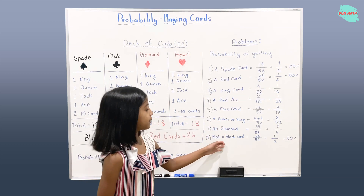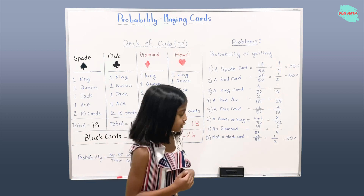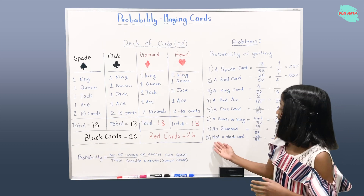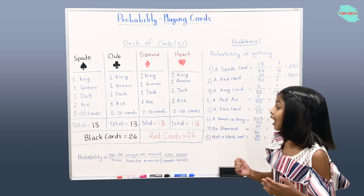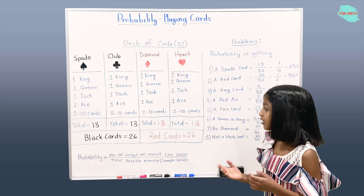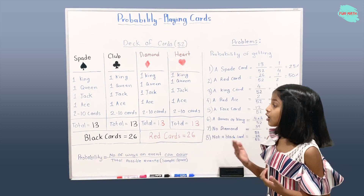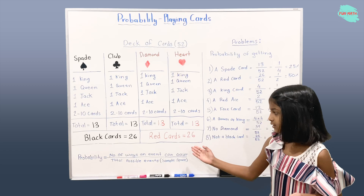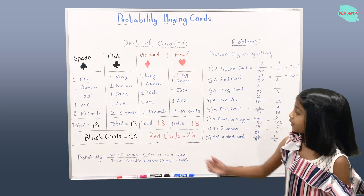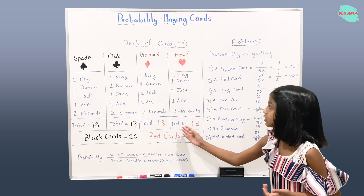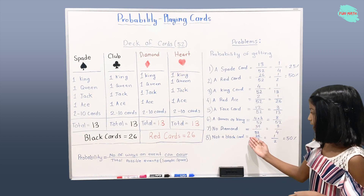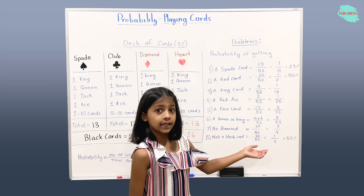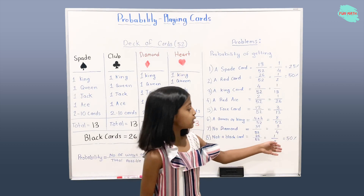Probability of getting not a black card is 26 over 52. We have 26 as our numerator because there are 26 black cards in the deck, and we're finding the cards that are not black — which are the 26 red cards: 13 from diamond suit and 13 from heart suit. 26 over 52 can also be said as 1 half and 50%.